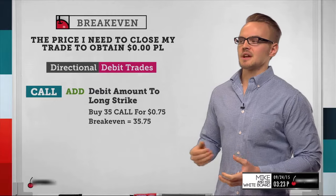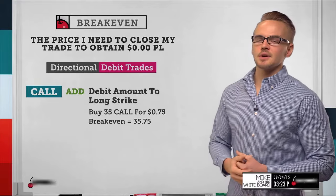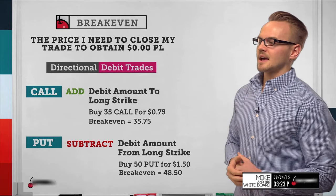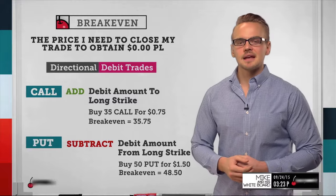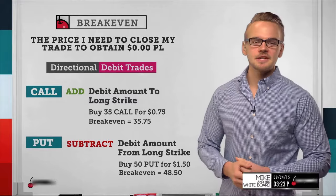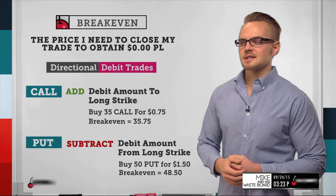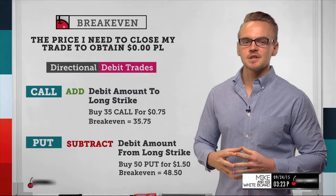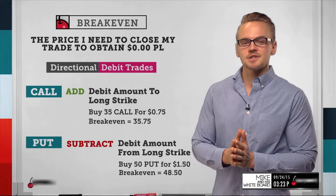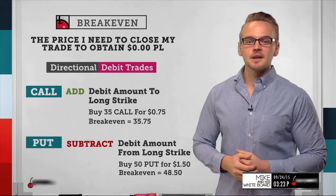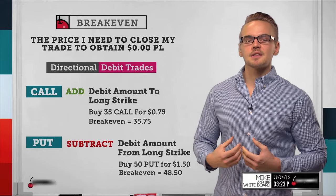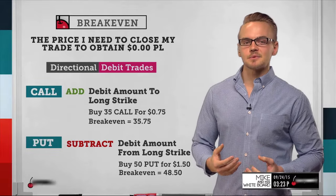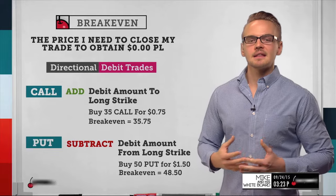Now let's look at a put example. With puts, subtract the debit amount from the long strike. Let's say I've got a $50 stock price and I buy an at-the-money put for $1.50. My break-even price at expiration is $48.50. Since a put is the right to sell 100 shares at a certain strike price, if I own this $50 put and the stock is at $48.50, I'll be able to sell this put for $1.50 — matching what I paid — so $48.50 is my break-even price.